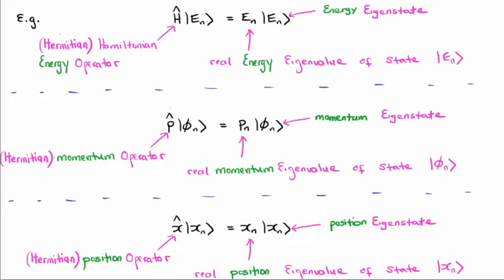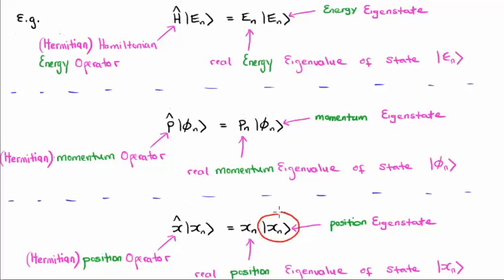Finally, if we want to look at position, we need the Hermitian position operator. If we act with this operator on a generic or arbitrary quantum state vector, that quantum state vector must collapse or project onto the eigenstates of the position operator. When the position operator acts on one of its eigenstates, it gives us back the same eigenstate but with a multiplicative constant — in this case the real position eigenvalue. So we have a position eigenstate or eigenket associated with the position operator.